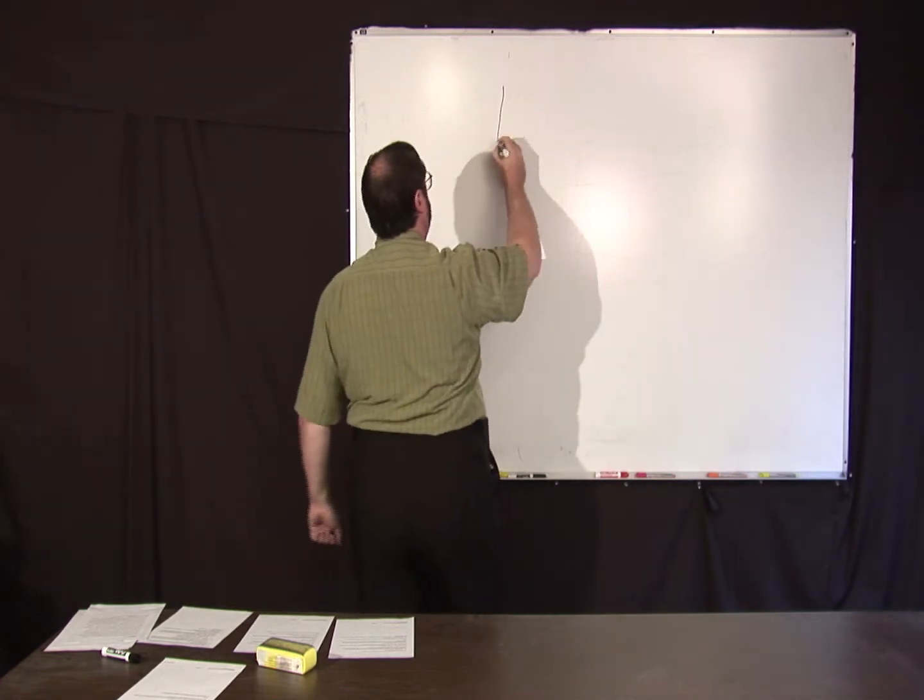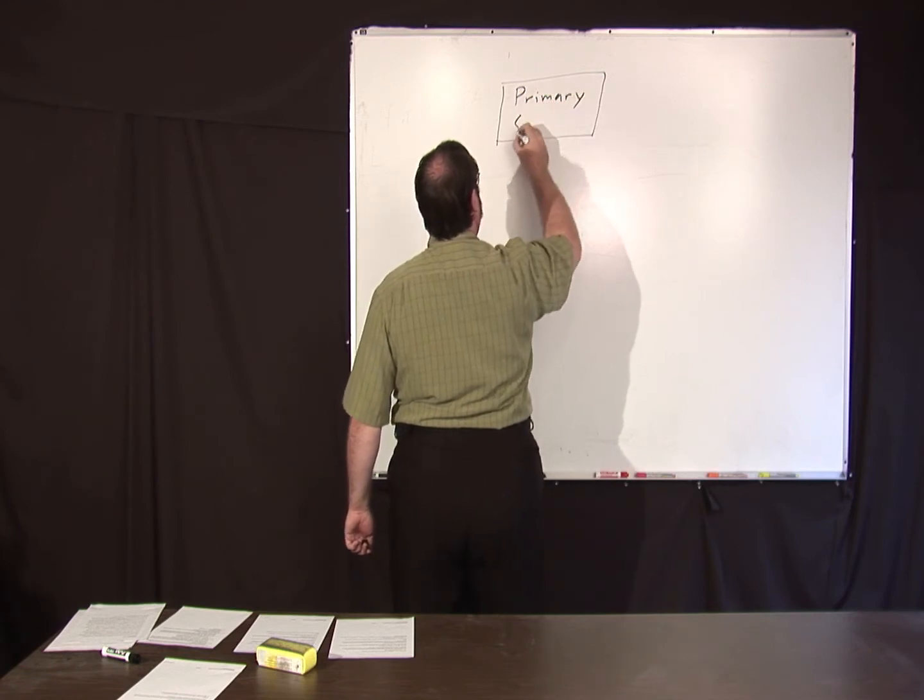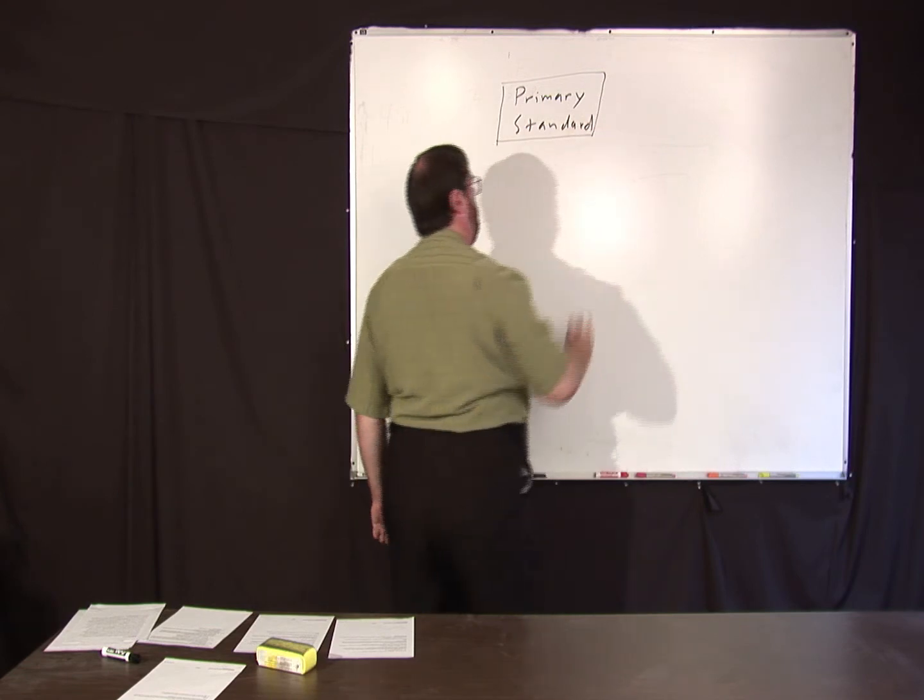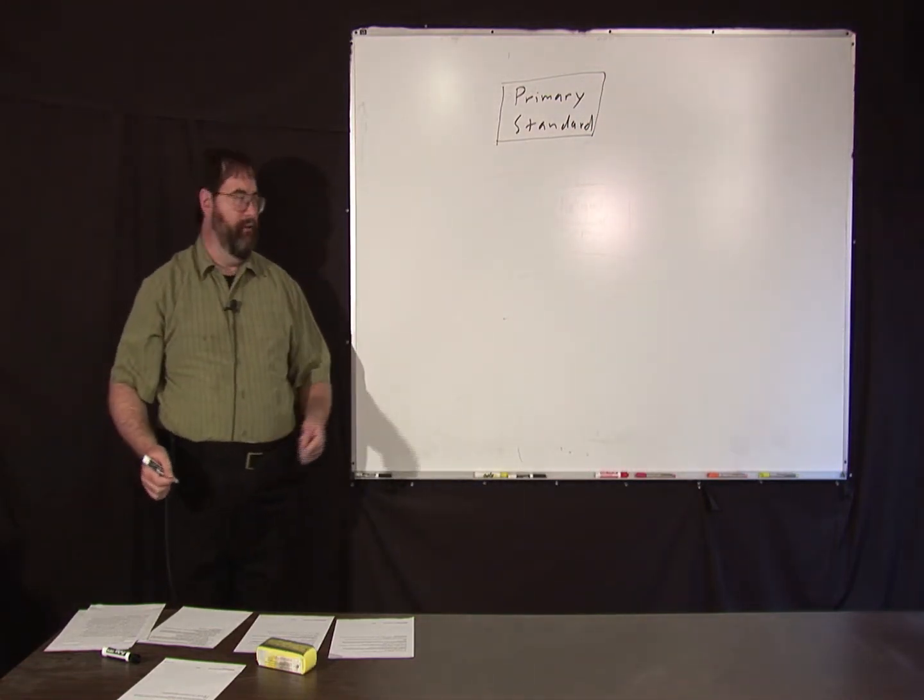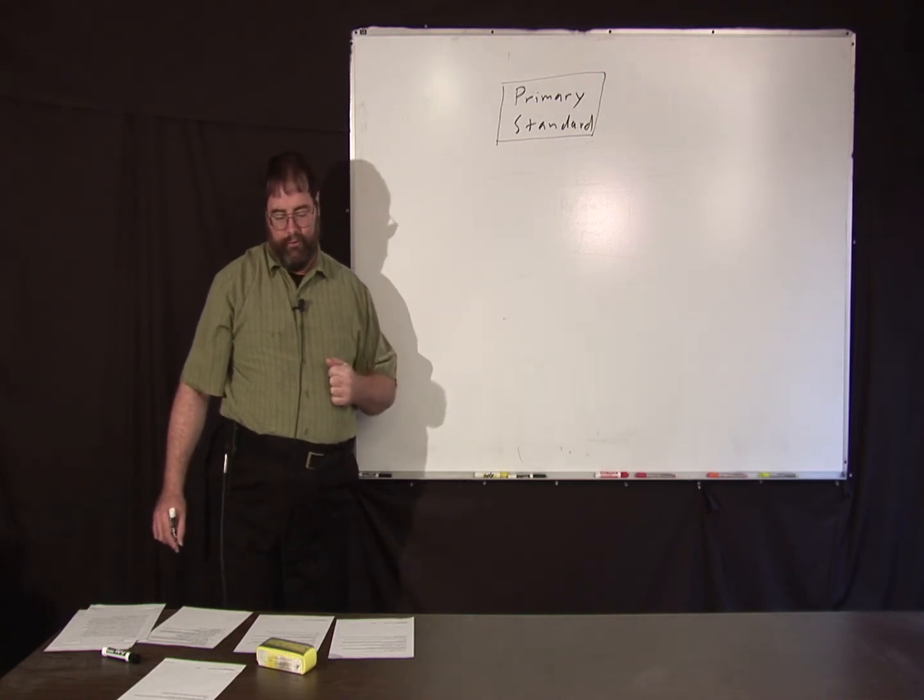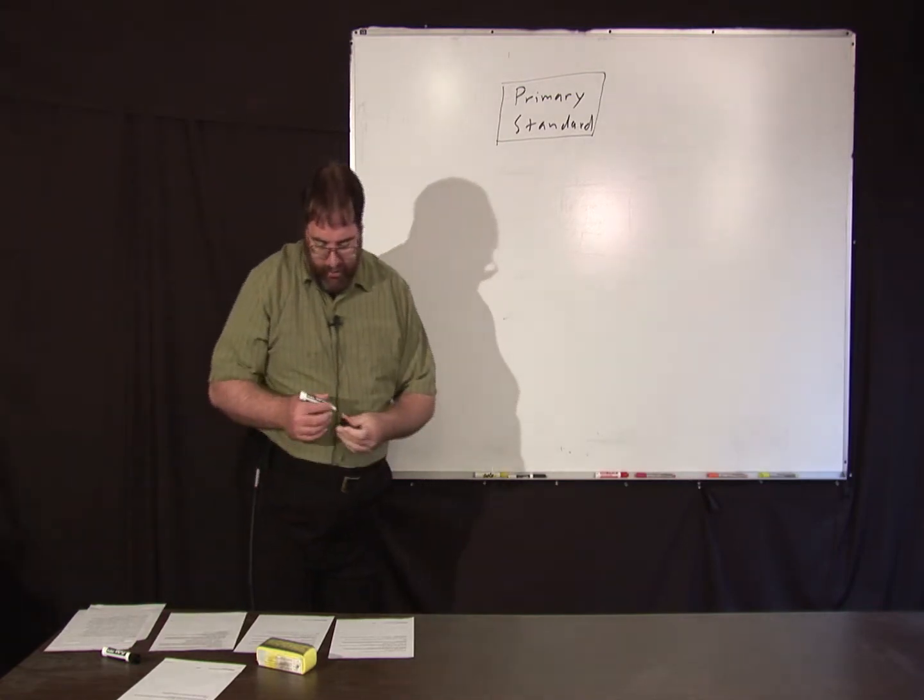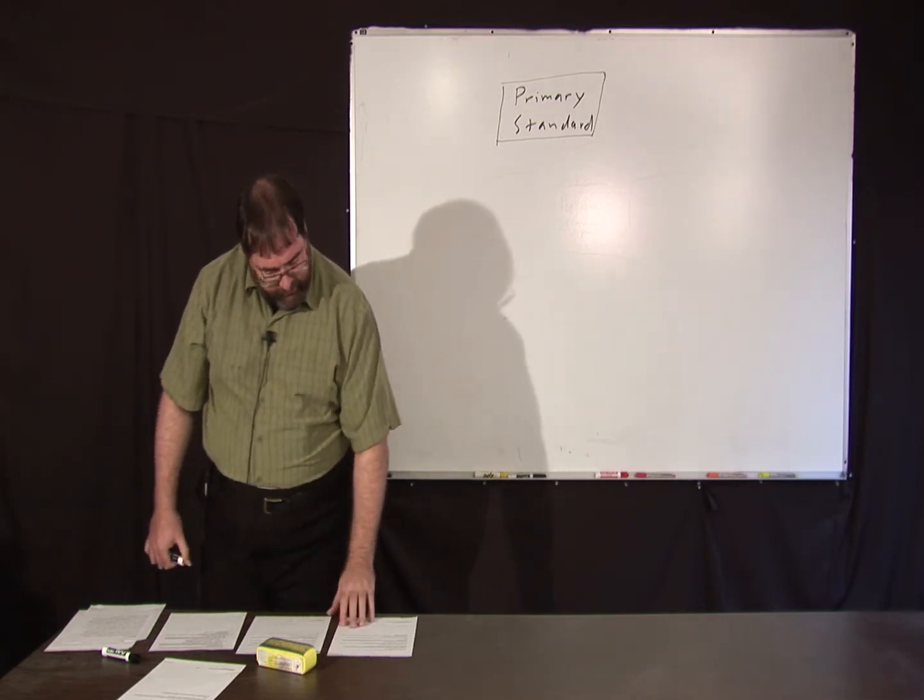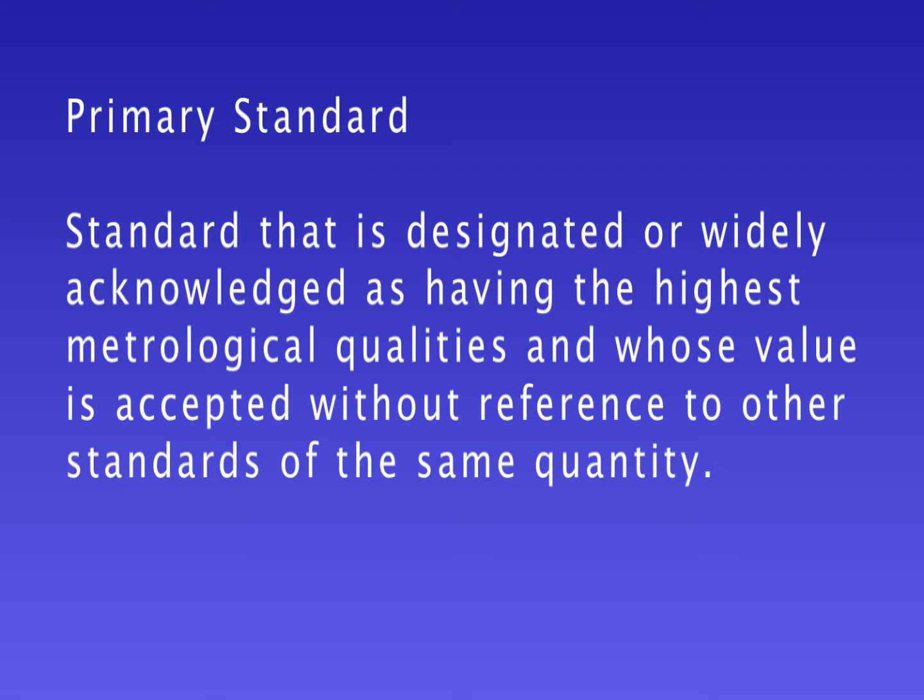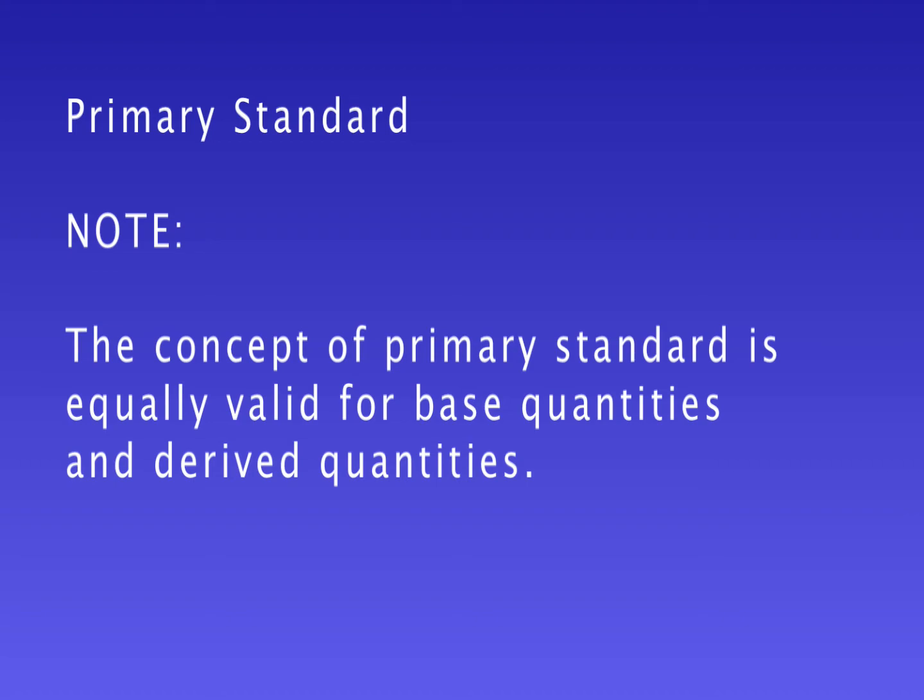We'll talk about primary standards. You can have a primary standard. And it may or may not be traceable back to an international standard or a national standard. For instance, it could be something like Josephson Junction voltage standards, a quantum Hall effect resistor. It could be some other thing that's traceable through natural physical constants or direct realization of the SI units. And a primary standard is defined in the VIM as a standard that is designated or widely acknowledged as having the highest metrological qualities and whose value is accepted without reference to other standards of the same quality. It has a note. The concept of primary standard is equally valid for base quantities and derived quantities.